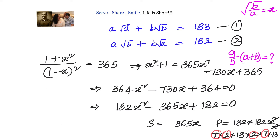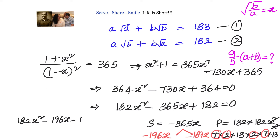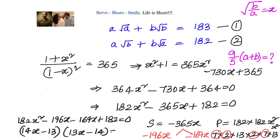We can split −365x as −196x − 169x. Then 182x² − 196x − 169x + 182 = 0 factors as 14x(13x − 14) − 13(13x − 14) = 0, giving (14x − 13)(13x − 14) = 0. So x = 13/14 or x = 14/13.